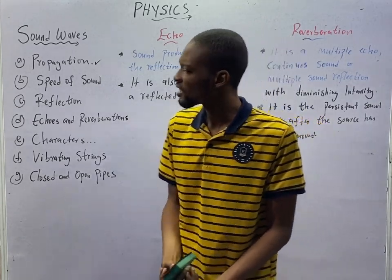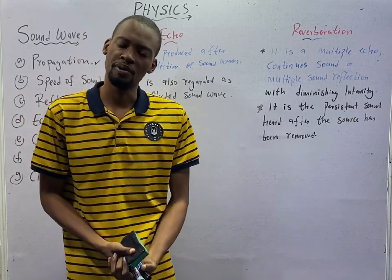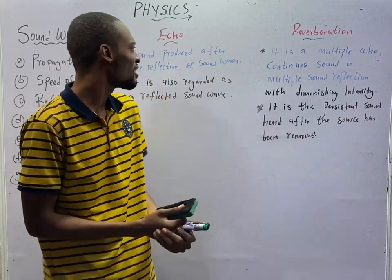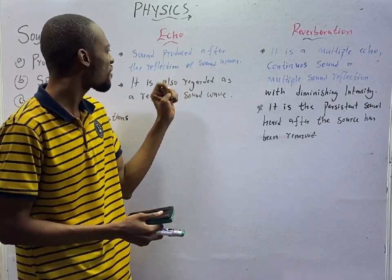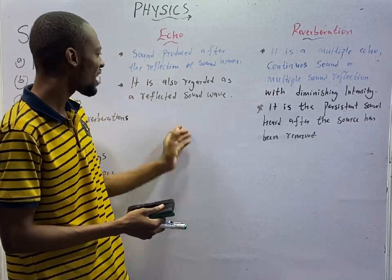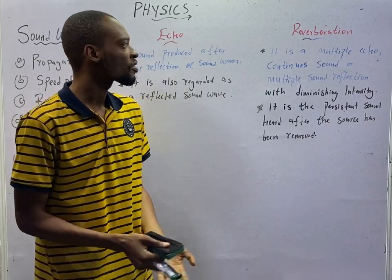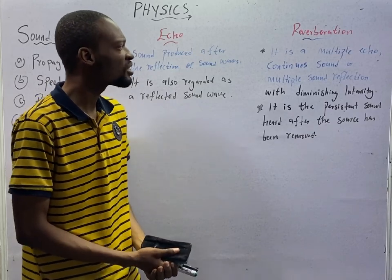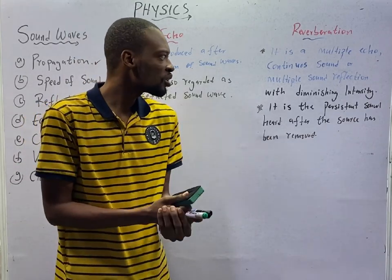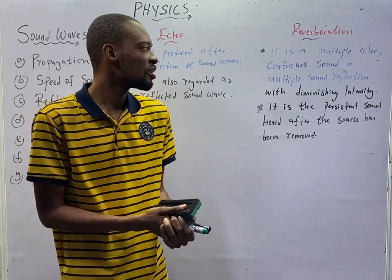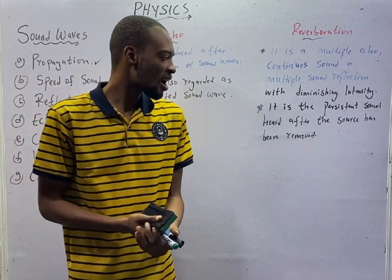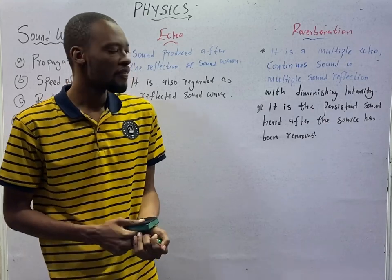Now, what is echo? What is reverberation? In terms of big grammar, echo is a sound produced after the reflection of sound waves. It is also regarded as reflected sound wave. In terms of grammar, reverberation is a multiple echo, it is a continuous sound or a multiple sound reflection with diminishing intensity. It is the persistent sound heard after the source has been removed. That is reverberation.